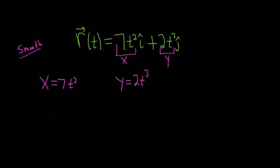The next thing you want to do to find out where it's smooth is you take the derivative. So x prime is equal to, looks like 2 times 7 is 14, so 14t. And then y prime will be equal to 3 times 2, so 6t squared.